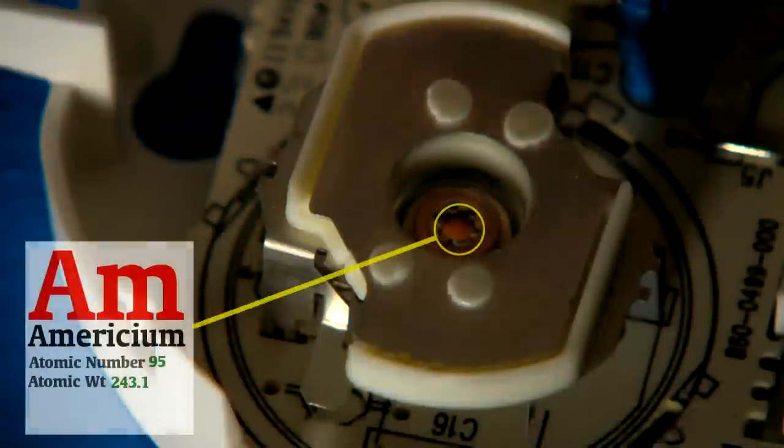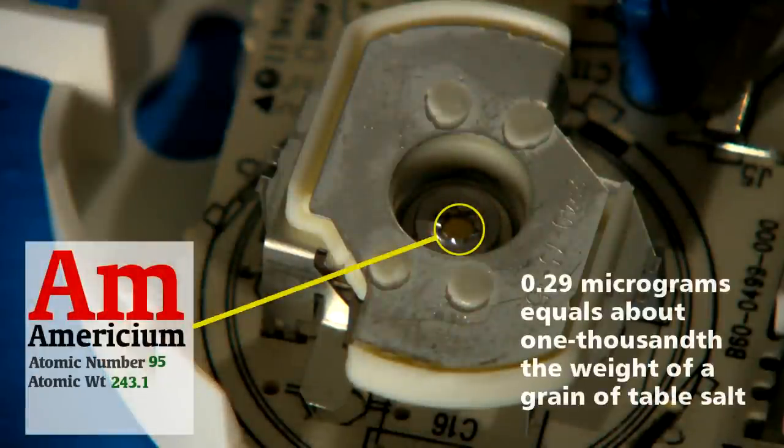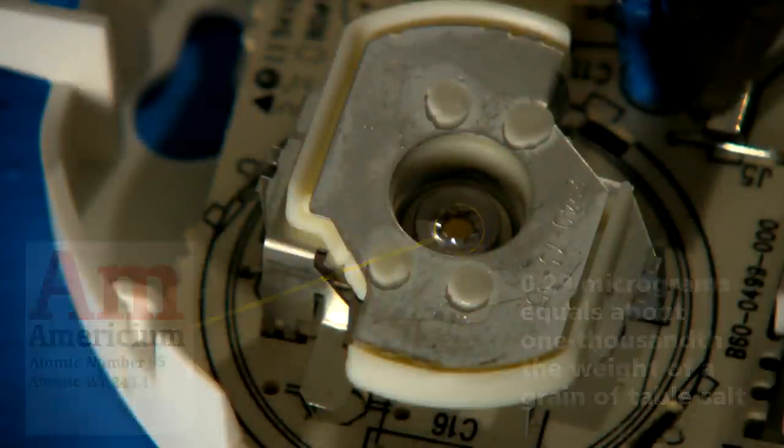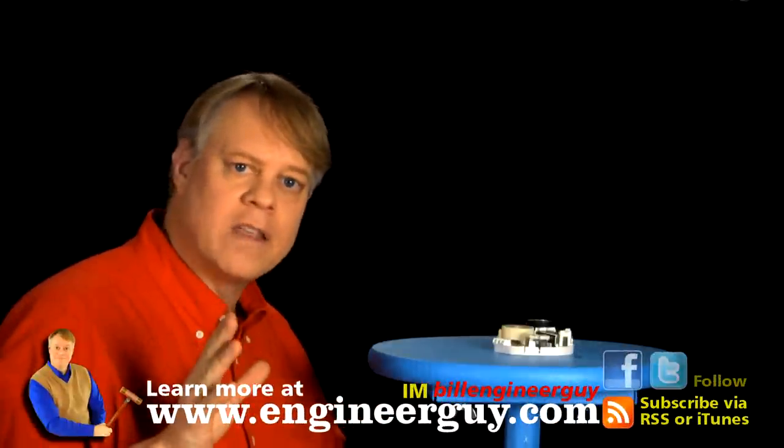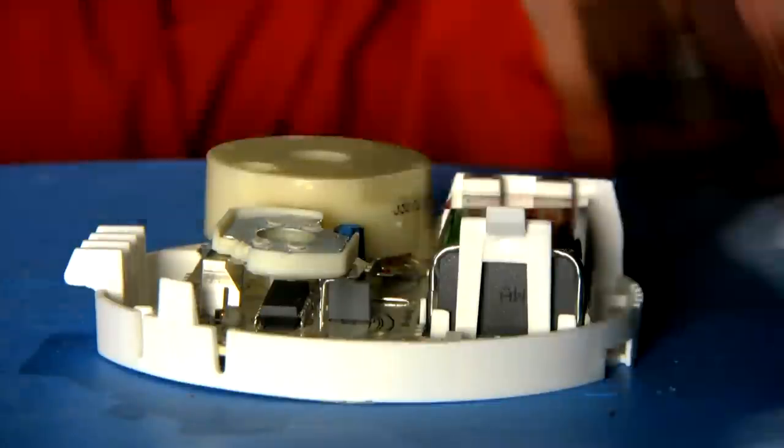Tucked in here lies about one microcurie of radioactive americium-241. That's about .29 micrograms. That tiny bit of radioactive material generates a small current that makes the detector work. Let me explain how.